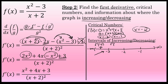Between negative 3 and negative 2, I'll choose negative 2.5. Substituting negative 2.5 into the first derivative yields a negative number, so the function is decreasing between negative 3 and negative 2. Between negative 2 and negative 1, I'll choose negative 1.5 as my test value. f' of negative 1.5 is negative again, so the graph is also decreasing from negative 2 to negative 1. From negative 1 to infinity, substituting 0 into the first derivative gives a positive number — positive 3 fourths — so this function is increasing from negative 1 to infinity.